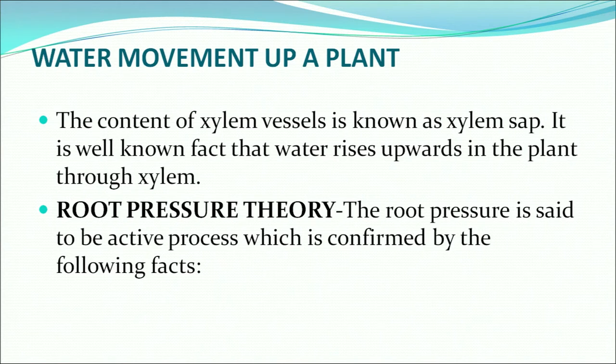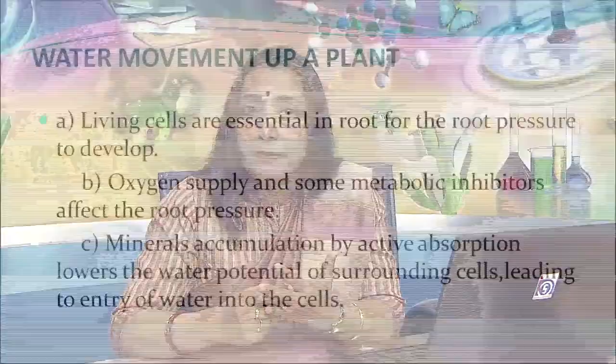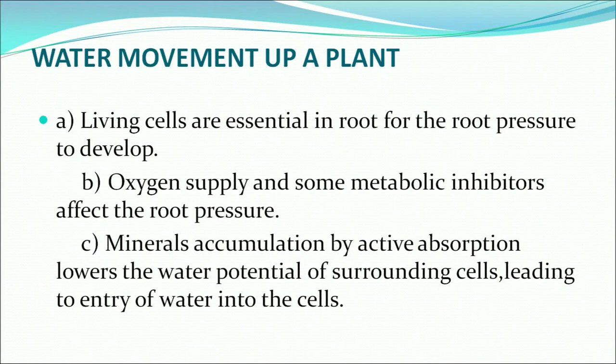Root pressure is said to be an active process, confirmed by several facts: living cells are essential in the root for root pressure to develop — dead cells cannot create any pressure. Second, oxygen supply and some metabolic inhibitors affect root pressure. Third, mineral accumulation: along with the water current, mineral salts are absorbed by root hairs. Mineral accumulation by active absorption lowers the water potential of surrounding cells, leading to entry of water into the cells.